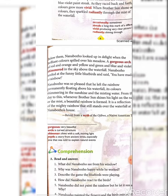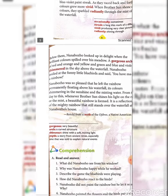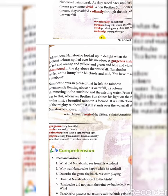Vocabulary meanings: Occasionally — sometimes. Streak — a long thin mark of a different color. Vivid — producing a very clear picture in the mind. Radiantly — shining through. Gorgeous — very beautiful. Arch — a curved structure. Shimmer — to shine with a soft moving light. Myth — a story from ancient times, especially one that was told to explain natural events.